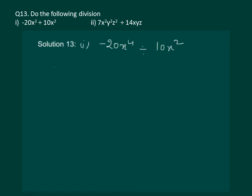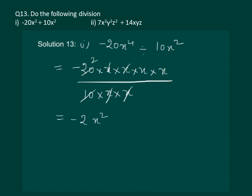We can start by writing it as minus 20 into x into x 4 times since it is x power 4, whole divide by 10 multiplied by x into x as it is x square. Now it is easy to cancel 10 to the 20 and 2x get cancelled and we are left with minus 2x square which is the required answer.